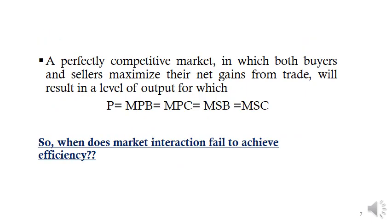In a perfectly competitive market, both buyers and sellers maximize their net gains from trade at the level of output for which price = marginal private benefit = marginal private cost = marginal social benefit = marginal social cost. The question now is: when does market interaction fail to achieve efficiency?